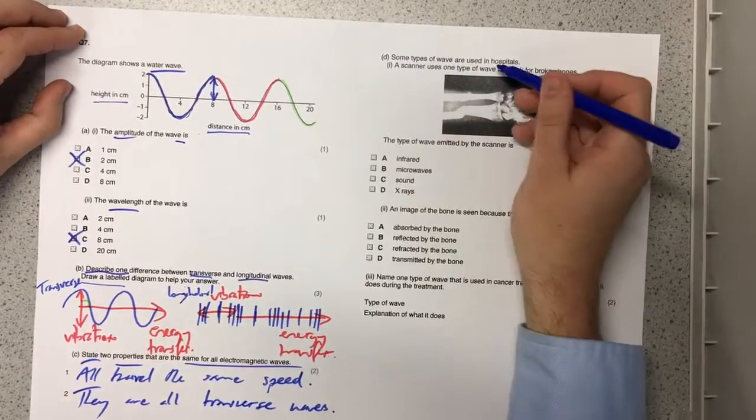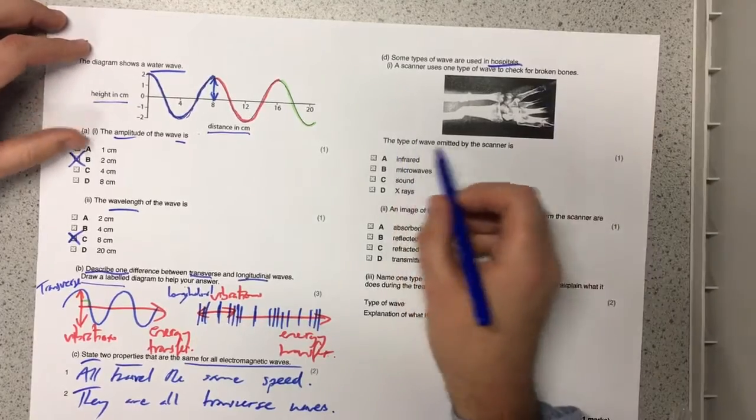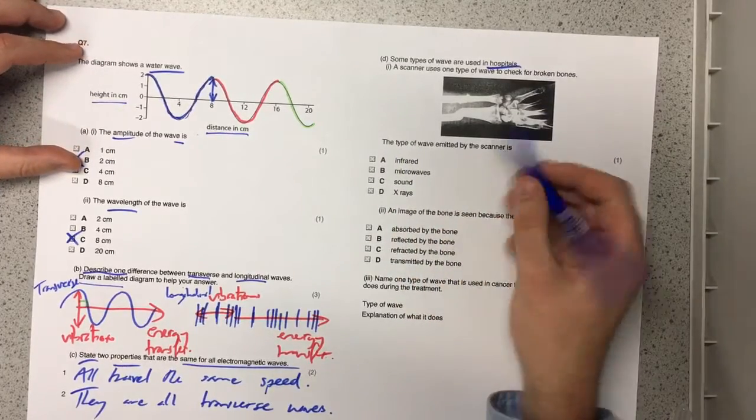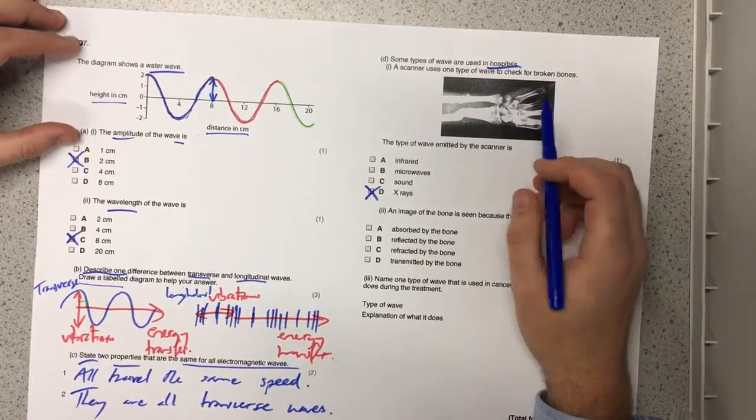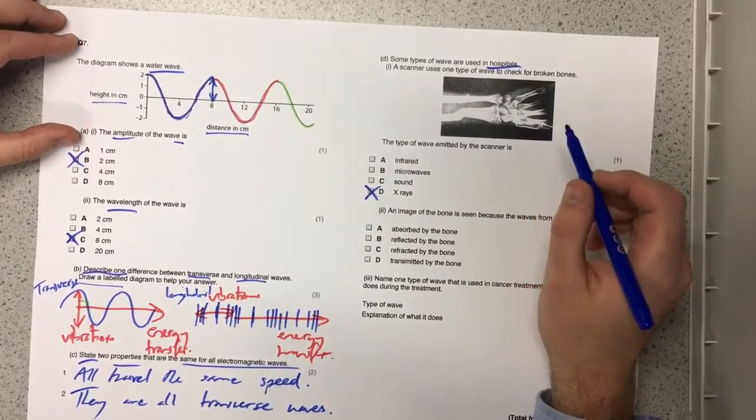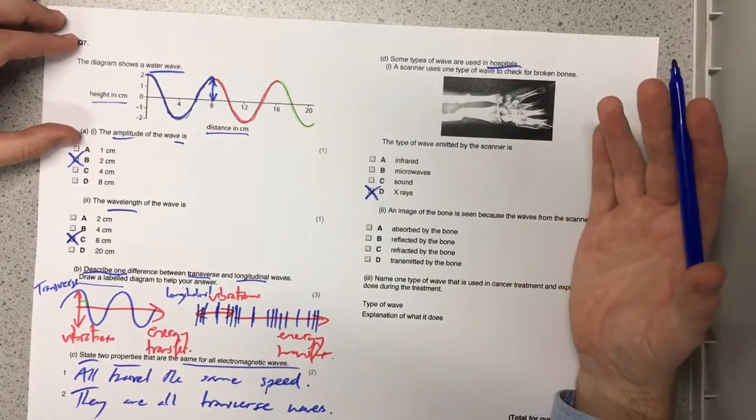Some types of waves are used in hospitals. A scanner uses one type of wave to check for broken bones. The type of wave emitted by the scanner is? It's such an easy question. We're all familiar with x-rays. Most of us have had one at some point or another and this is used to take photographs of the inside of our body and our bones.